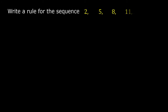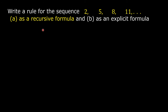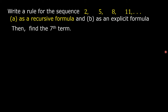Example: write a rule for the sequence 2, 5, 8, 11, and so on — first as a recursive formula, and then as an explicit formula. Then, find the seventh term.